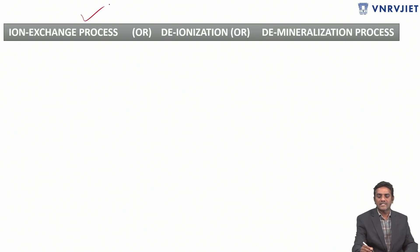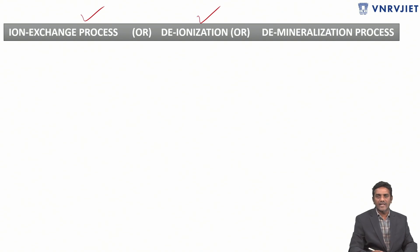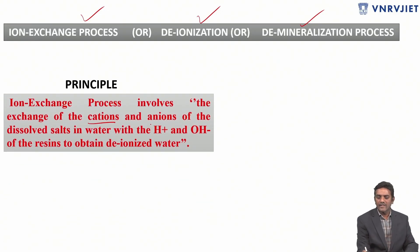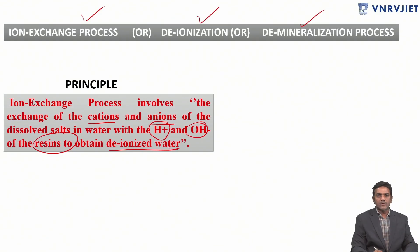The ion exchange process is also called deionization, because all unwanted ions are replaced from water except H⁺ ions and OH⁻ ions. It is also called demineralization. Here we are replacing the unwanted cations and anions with H⁺ and OH⁻ ions attached to resins, in order to obtain deionized water — that is the principle.